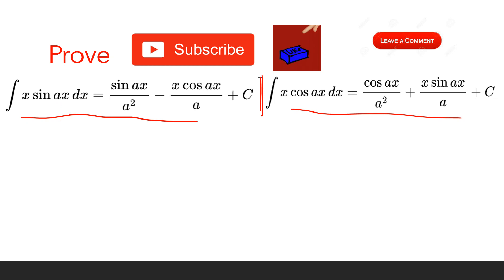Let me quickly prove these. The first one we can write with 1/a and cosine ax - there's a minus sign here. The second one we can write as 1/a sine ax.